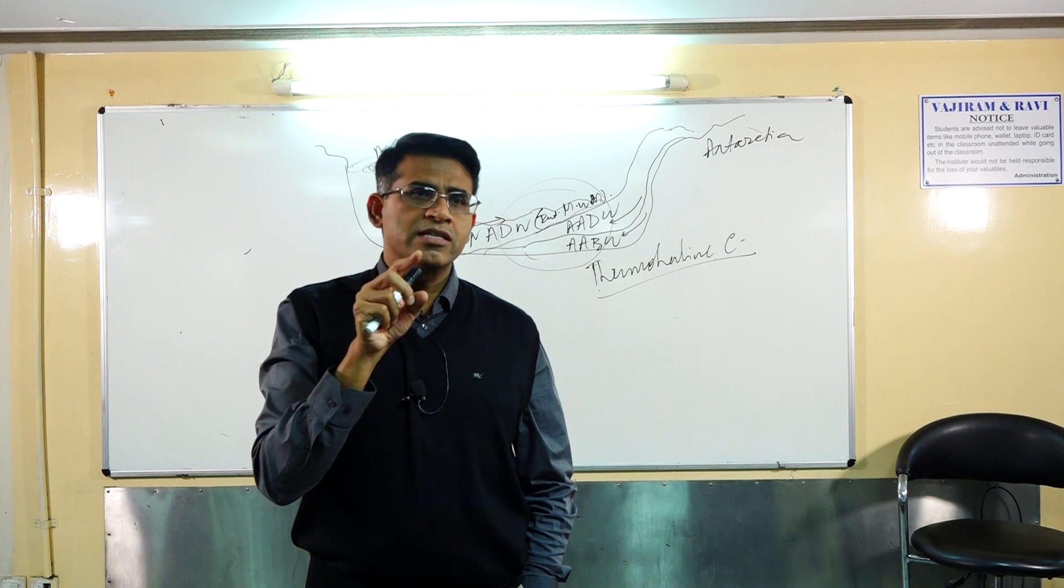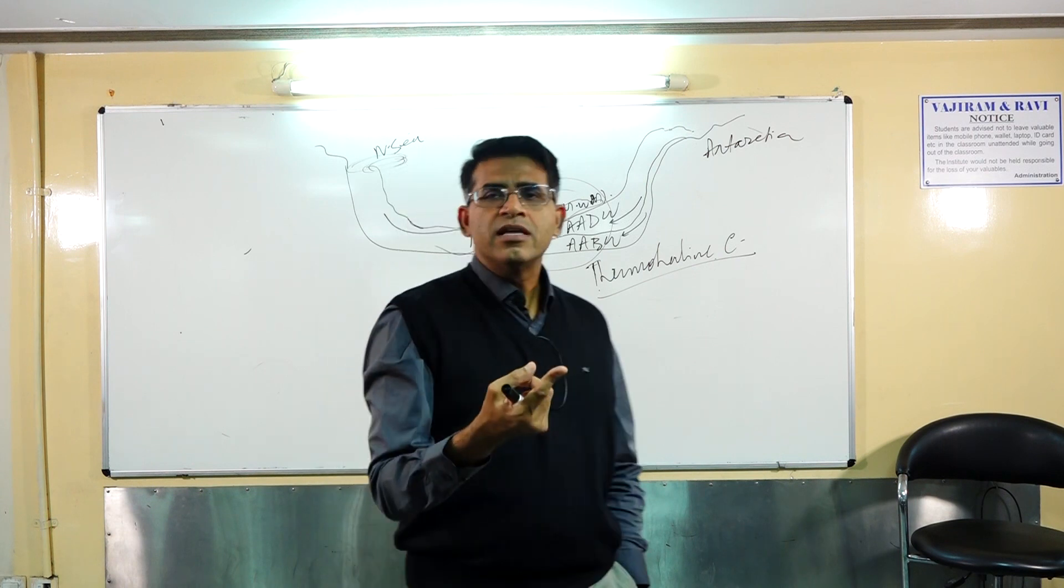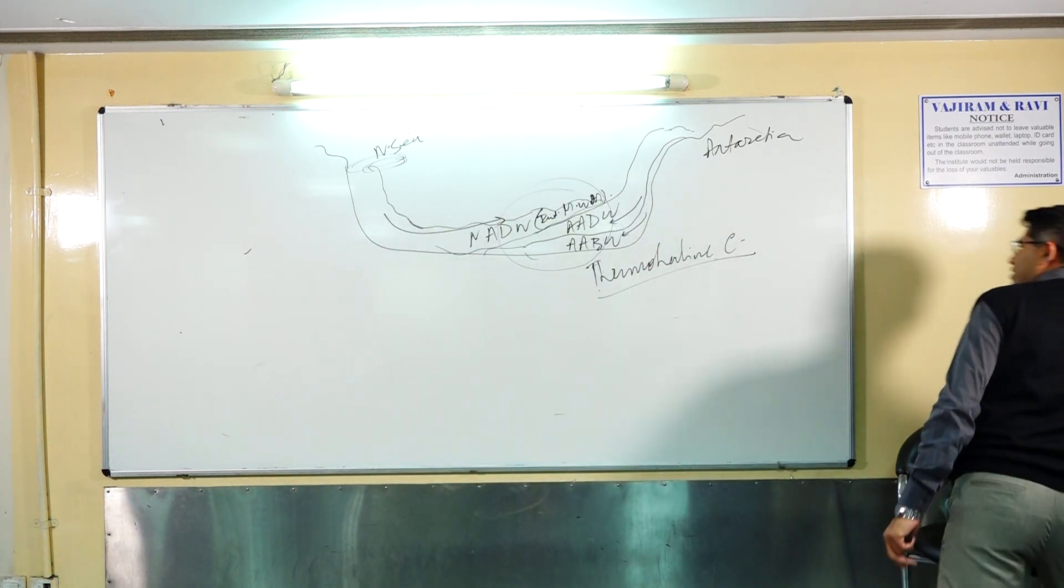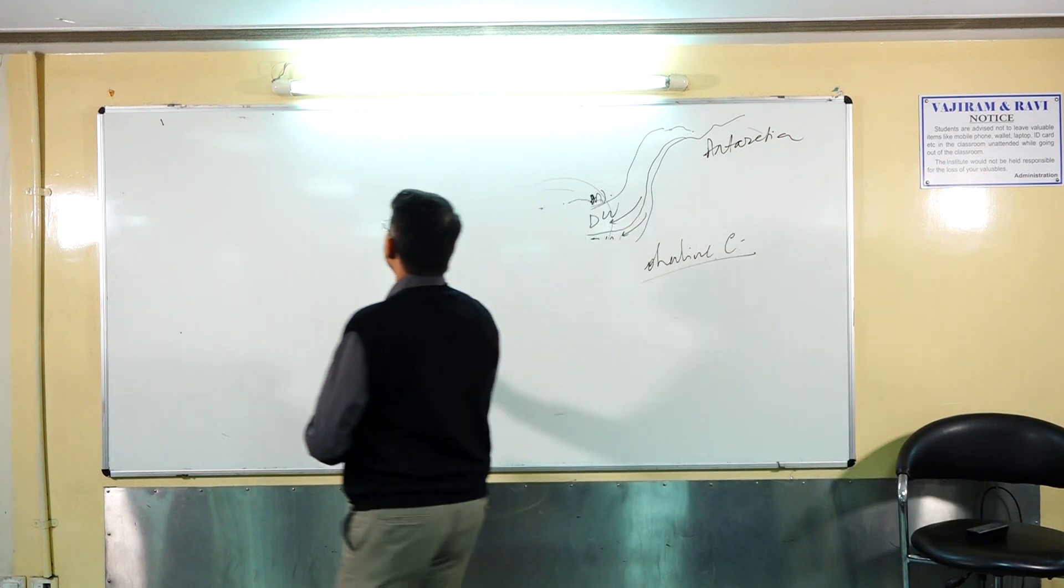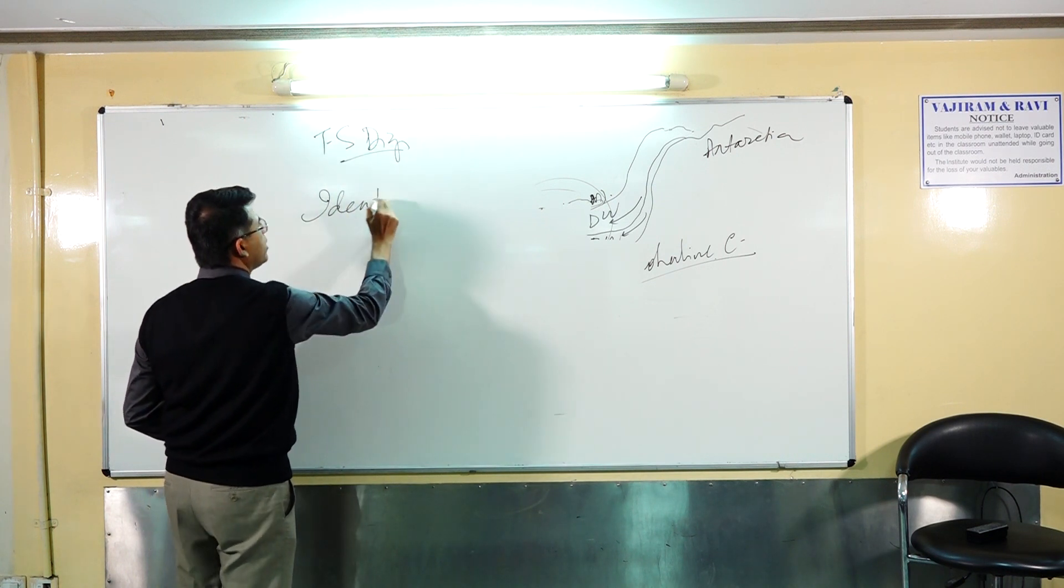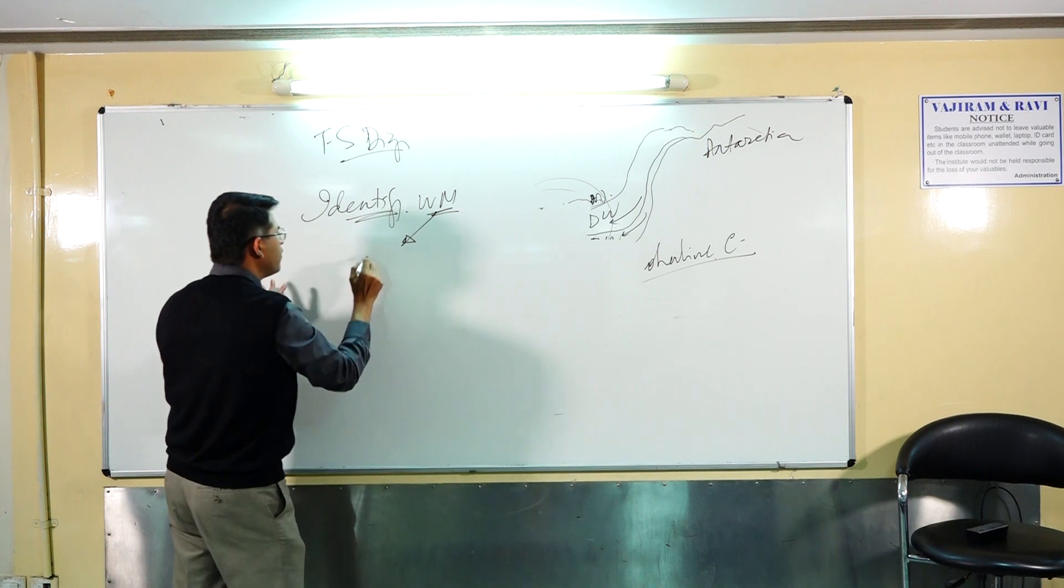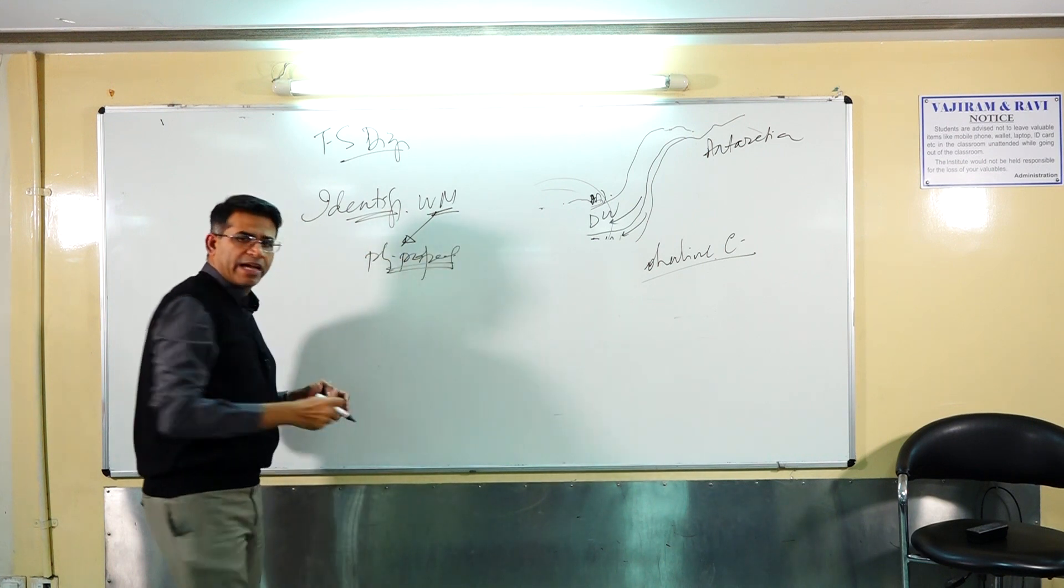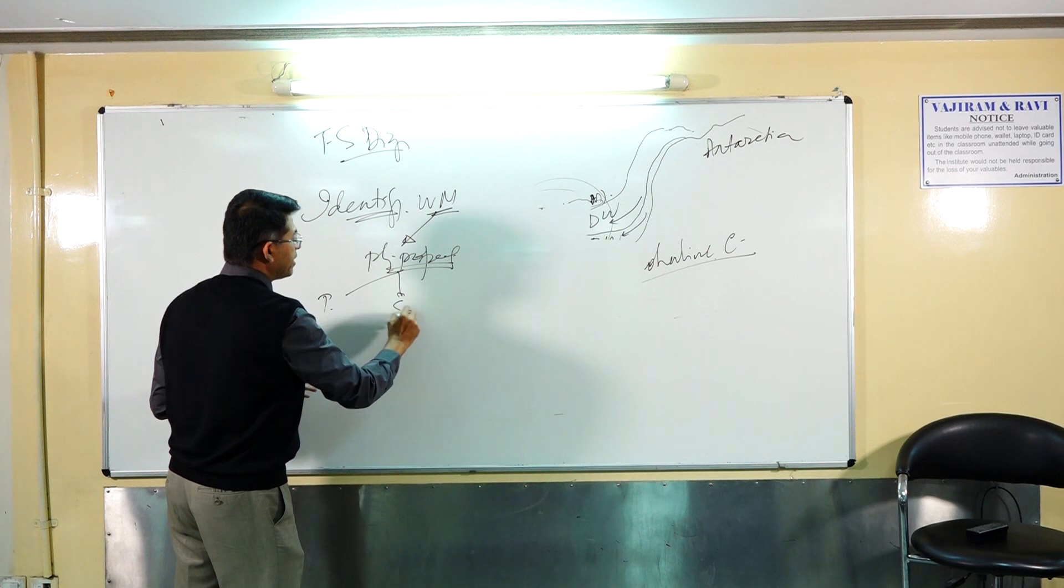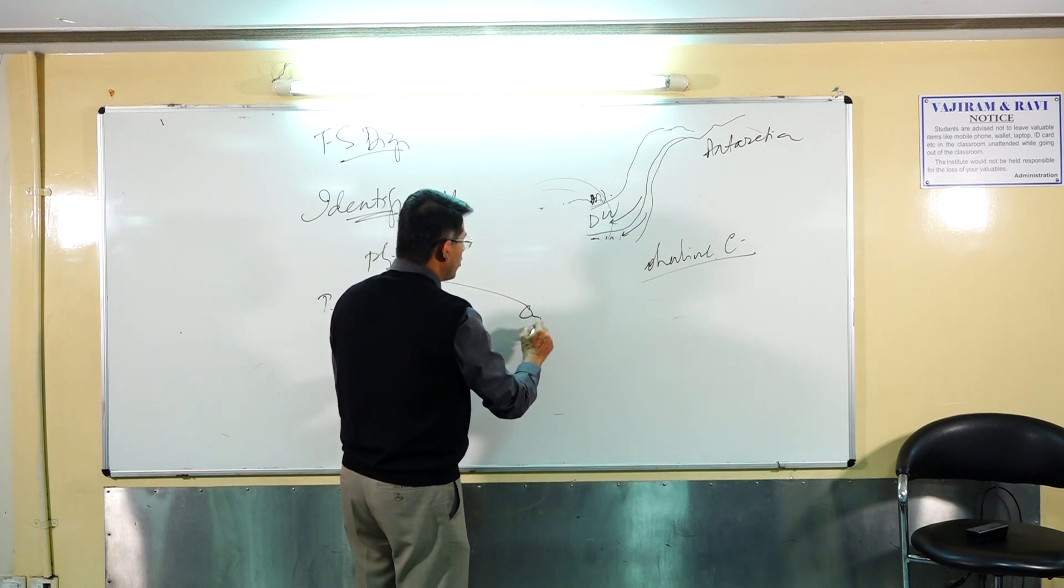But we know the density itself is dependent on temperature and salinity. So if you want to understand this challenge, then I need to identify a water mass. I need to have some physical property which I can measure. Temperature, we also have properties like amount of oxygen dissolved, amount of carbon dioxide dissolved.